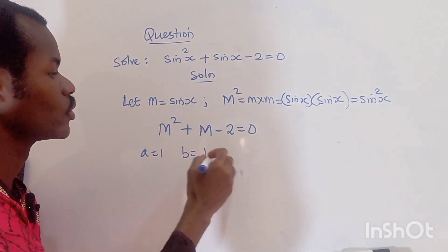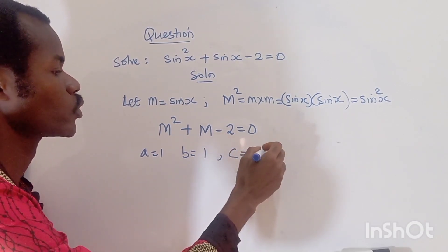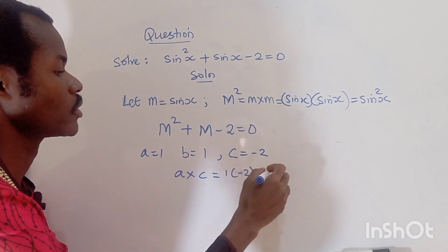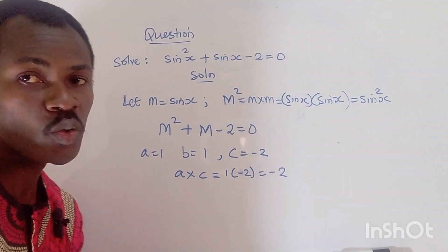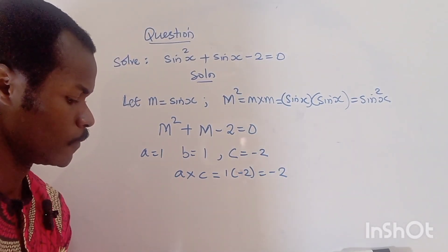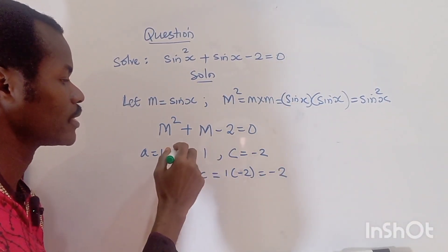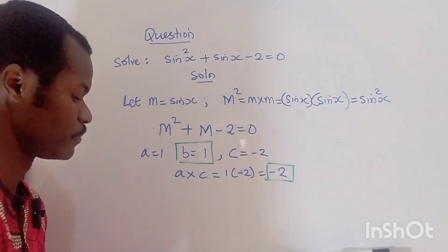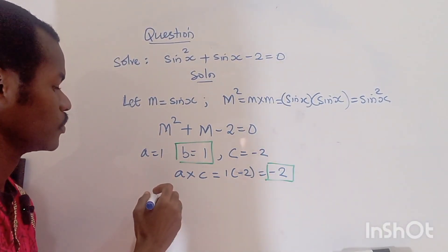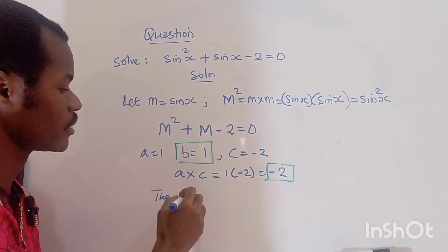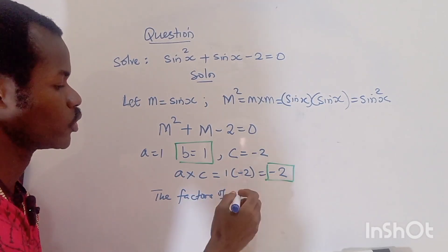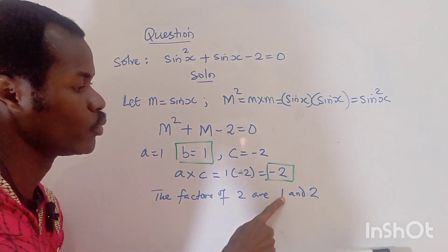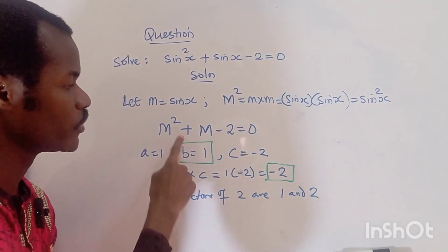For factorizing m squared plus m minus two: our a is one, b is one, and c is minus two. So a times c equals one times minus two, which is minus two. We want factors of minus two that add up to one — those are positive two and negative one.